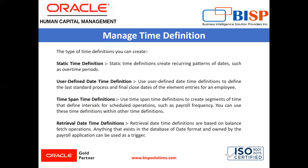Next is a time span time definition. Use a time span time definition to create a segment of time that defines intervals for scheduled operations such as payroll frequency. You can use these time definitions within other time definitions. For example, a company wants to make employee payments on the last day of the month, so they create a time span definition and use it when defining the payment method.